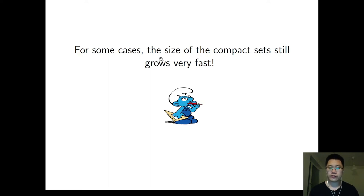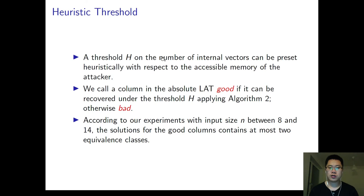Still, for some cases, the size of the compact set grows very fast. To solve this, we set a heuristic threshold according to the accessible memory of the machine. We define good columns and bad columns according to the threshold. We call a column in the absolute LAT good if it can be recovered under the threshold applying Algorithm 2. Otherwise, we call the column a bad column.